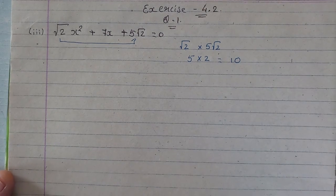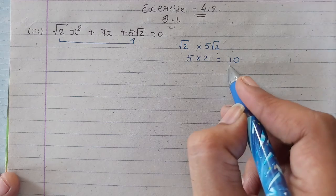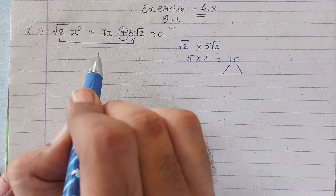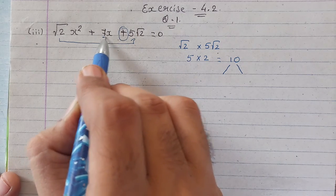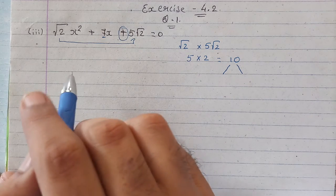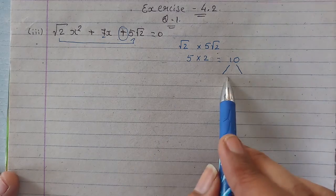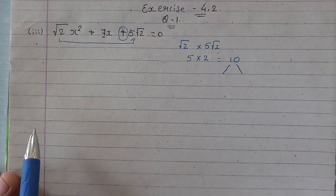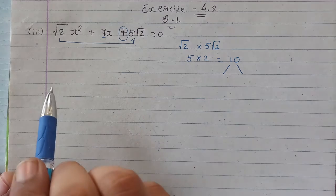Now, we need to find two factors whose multiplication should be 10. Since there's a positive sign here, the addition of those two numbers should equal 7. In the first and second problems we found two numbers whose subtraction equaled the middle term. But here the addition should equal the middle term, because here at the end there's a plus sign.